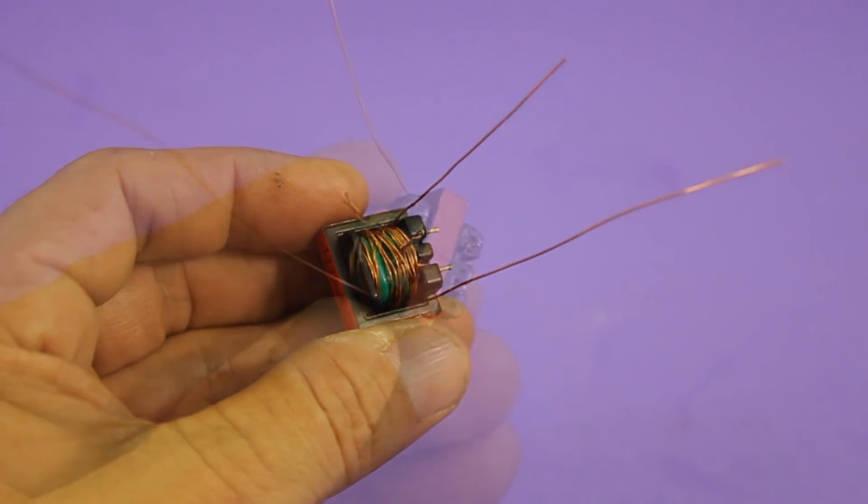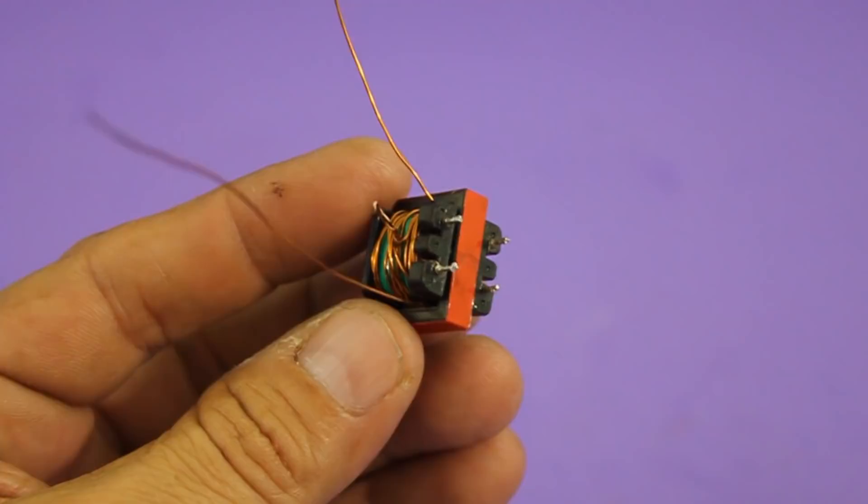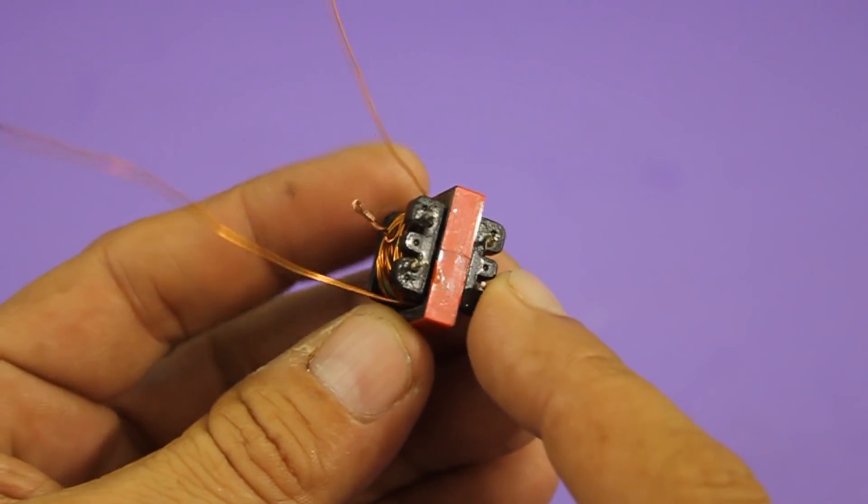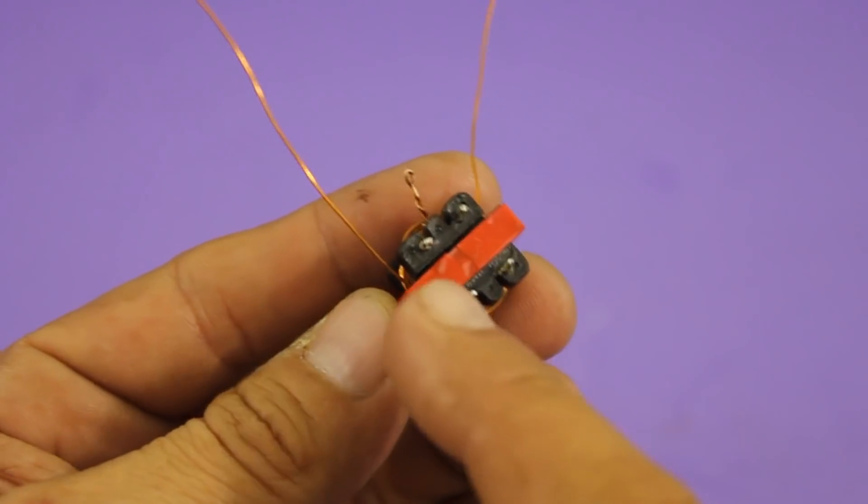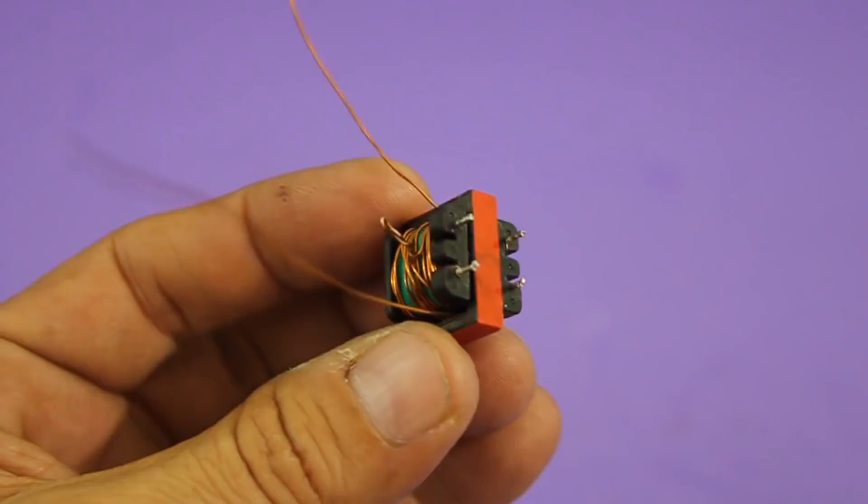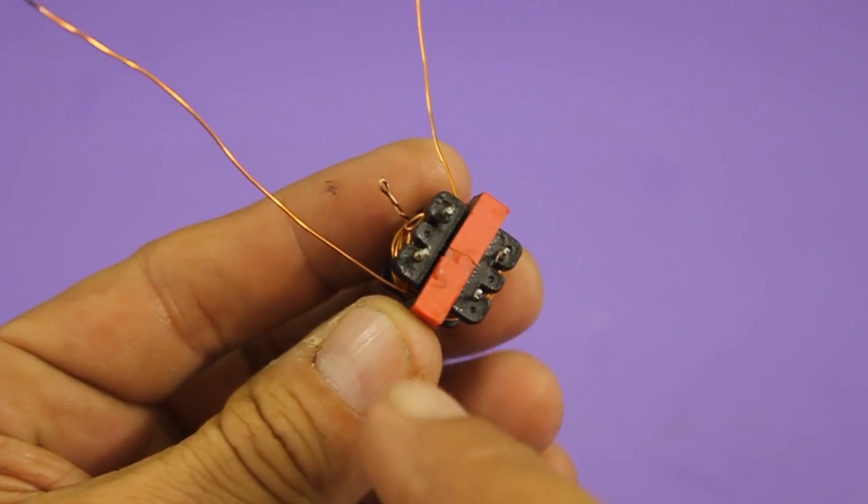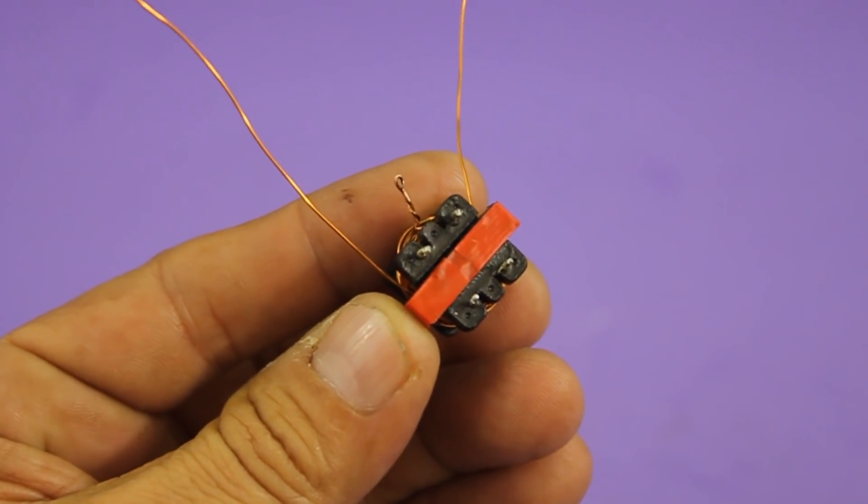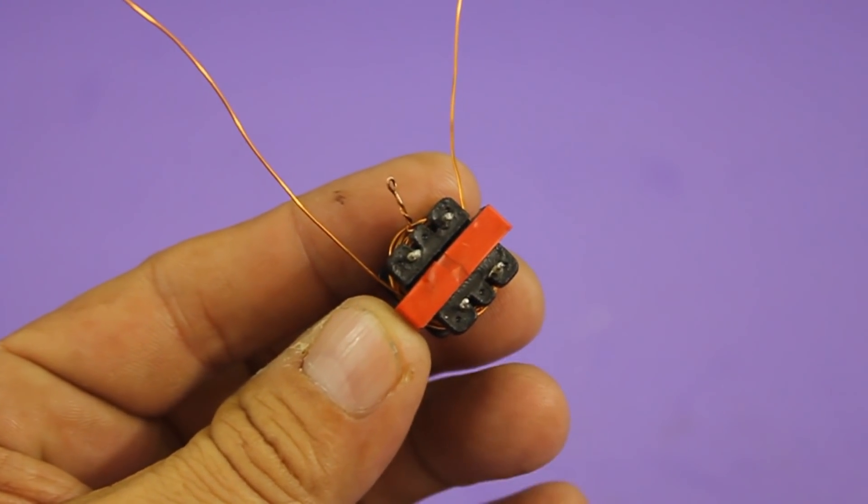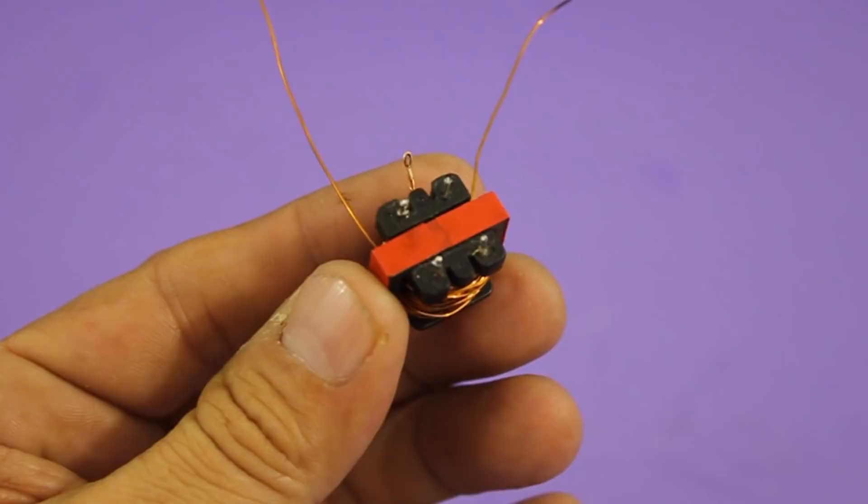Now let's see how to make the connections. It is important to identify the internal coil of the transformer. This normally has four pins but only two of them are connected to the coil. You can use a multimeter to check the resistance, and the pins with around five ohms resistance will be the ones that are connected to the coil.